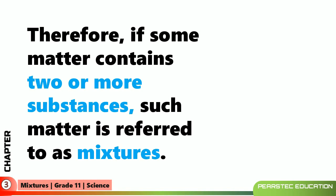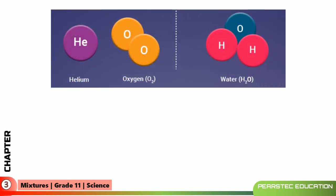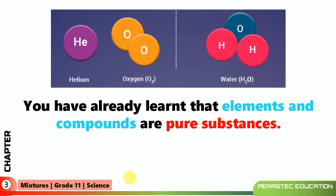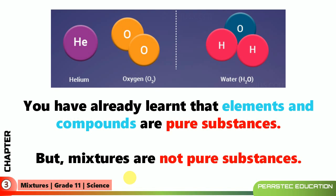If some matter contains two or more substances, such matter is referred to as a mixture. We have already learned from previous classes that elements such as helium and oxygen, and compounds like water, are pure substances. But mixtures are not pure substances. So helium, oxygen, and water — those are not mixtures, those are pure substances.